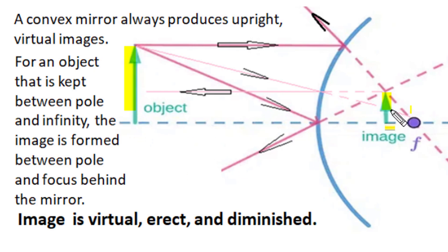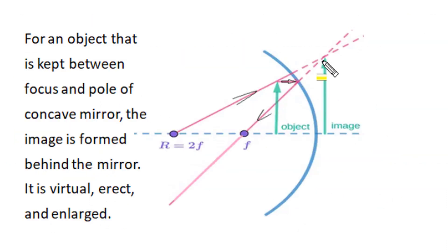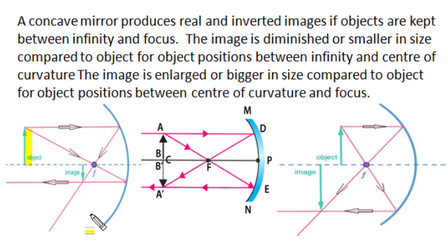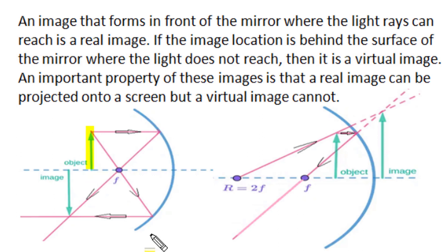A convex mirror always produces a virtual, upright, erect, and diminished image regardless of the object's position. When the object is at infinity, a point-sized image forms at the principal focus behind the mirror. As the object moves toward the pole, the image slightly increases in size and also moves toward the pole. A concave mirror produces real and inverted images when the object is placed between infinity and the principal focus.